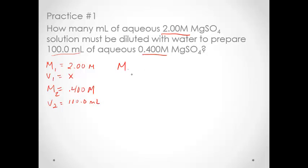If we set up our problem—and again, it never hurts to write the equation down—we have 2.00 M times our X equals 0.400 M times 100.0 mL. To get X, we have to divide by 2.00 M on both sides.